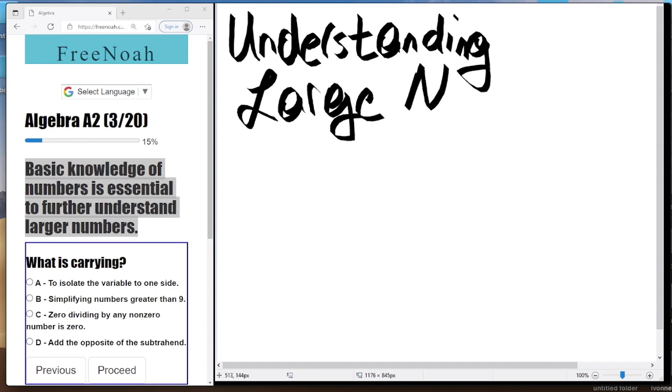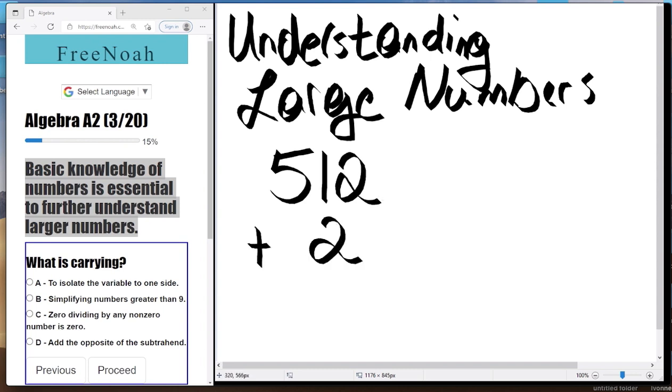So understanding large numbers. For example, let's give you an example here. We got 5,112 plus 27.